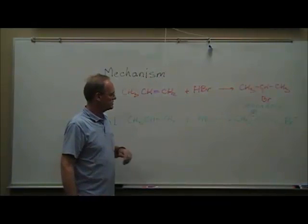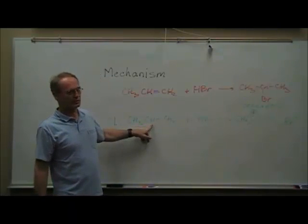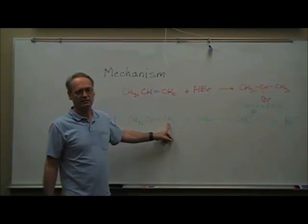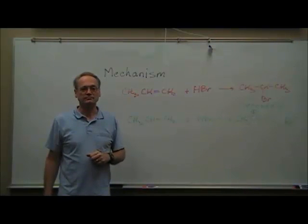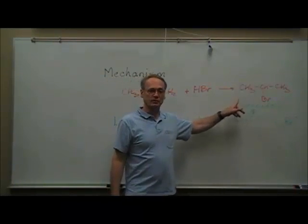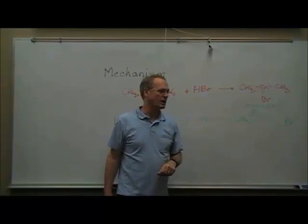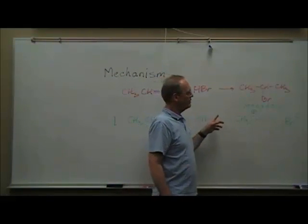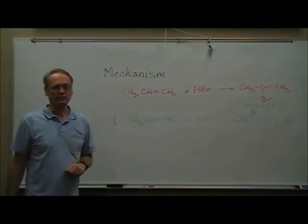Why does it do that? The other possibility is that the hydrogen could attach to the other carbon, leaving the terminal carbon positive — but that would give a primary carbocation. Since secondary carbocations are more stable than primary ones, as we learned in the previous video, it's the secondary carbocation that forms rather than the primary one. Notice — a little preview — that's where the bromine is going to end up being attached. So the bromine ends up on the carbon with fewer hydrogens because of the stability of carbocations. That's the mechanistic reason for Markovnikov's rule.